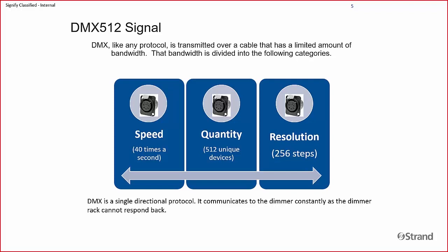The first thing to understand about DMX is that it is a single directional protocol, meaning the console will send the DMX signal to the dimmers, relays, LEDs, moving lights — whatever DMX device it is — and that device cannot respond back. So the console is constantly communicating, and that's the first part of understanding the bandwidth of what DMX is.